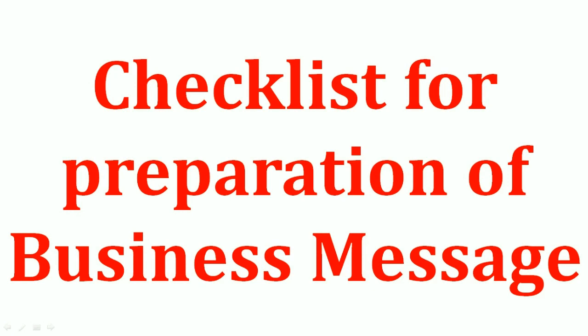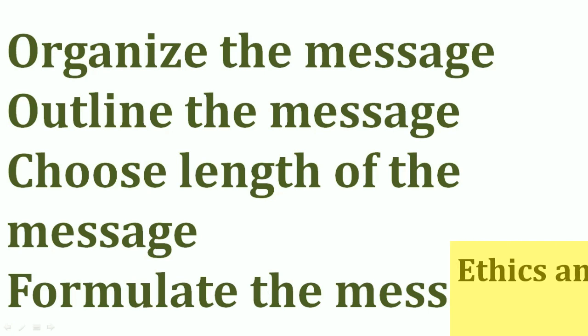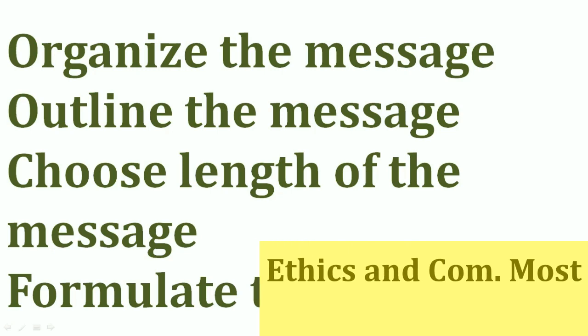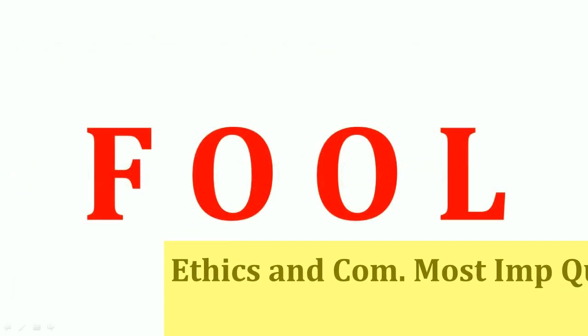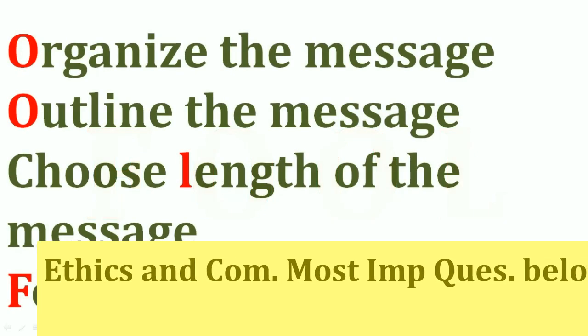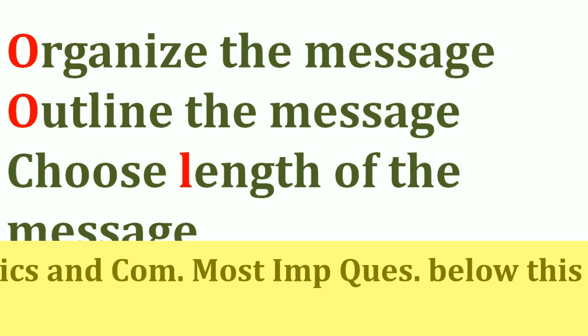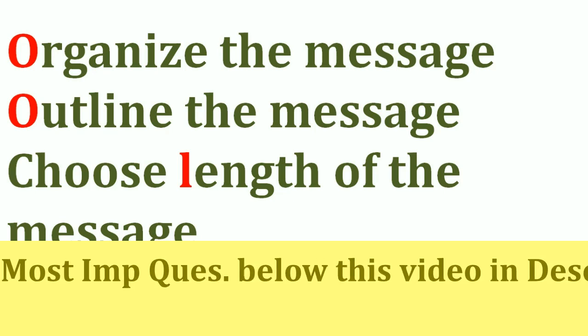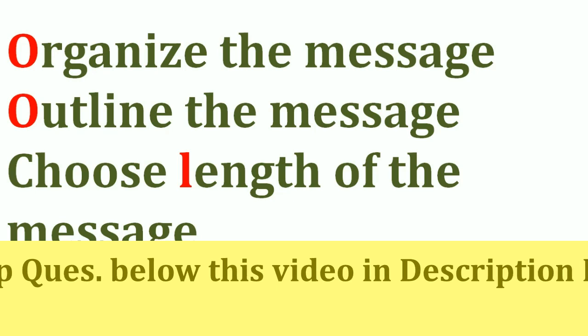The next question is the checklist for preparation of a business message, which has appeared many times. The four headings are: organize the message, outline the message, choose length of the message, and formulate the message. The short trick is FOOL — F for formulate, O for organize, O for outline, and L for length (choose length of the message).